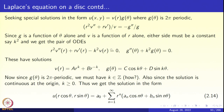This gives two ODEs: r²v″ + rv′ − k²v = 0, a Cauchy–Euler equation with solutions ar^k + br^{−k}; and g″(θ) + k²g(θ) = 0, the harmonic oscillator equation with solutions c cos kθ + d sin kθ.